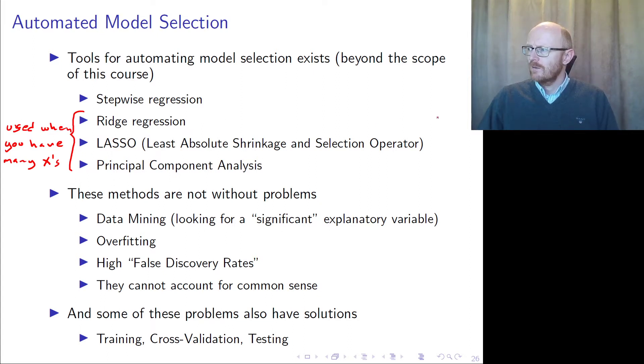What ridge regression and LASSO do is they kind of shrink the slopes towards zero, and they penalize the lesser important variables with a lower slope. So you are supposed to only keep those variables which are the most important.